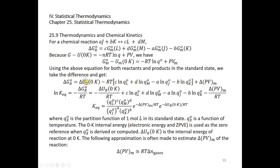The expression has three parts: the internal energy of reaction, the partition functions, and the delta PV term. The 0K internal energy of reaction is divided by negative RT, the partition function term is divided by negative RT, and the delta PV term is divided by negative RT. This gives us the full expression for the logarithm of the equilibrium constant K.